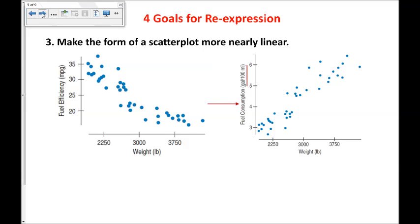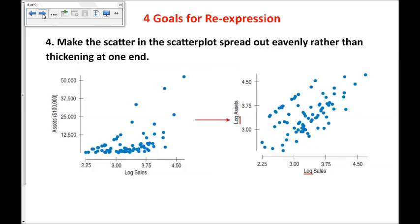We can make the form of a scatter plot more nearly normal. In this case, it's curved. We want it to be more linear. And finally, the equal spread condition, the equal variance condition, is to make the scatter in the scatter plot spread out evenly rather than thickening at one end. Here, both the x and the y variables are both spreading out, and so we could take the log of both of them and have it be a little more uniform spread throughout the graph.